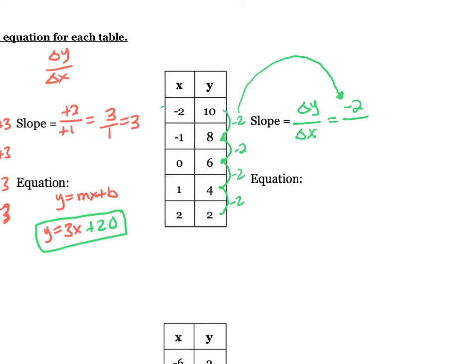And for my change in x, you'll notice that it is increasing by adding 1 every time, like it was on the last example. So my change in x is plus 1. So the slope would be negative 2 over 1, or you could just simplify that to negative 2. And for the equation, remember I need the y-intercept, which I will find by finding where the x is 0 in the table. So the y-intercept is 6. So my final equation would be y equals negative 2x plus 6.